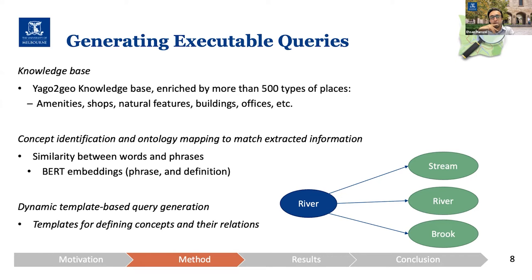For the ontology mapping, we have used BERT embeddings for both labels and definitions that we have as a glossary inside the knowledge base, and used cosine similarity to find the candidates. We also fine-tuned the process based on the place types in the knowledge base. As you see in this example, it's a 1-to-n relation: if we extracted 'river' from the question, it could map to stream, river, or brook inside the ontology of place types.